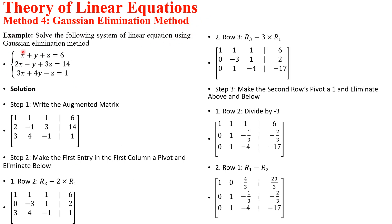Gaussian elimination method is a bit similar to the elimination method because we try eliminating the off-diagonal elements in order to narrow down the solution to determining the variables. But here we use augmented matrix form to solve the problem instead of the regular elimination method.